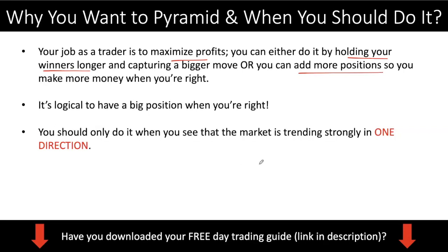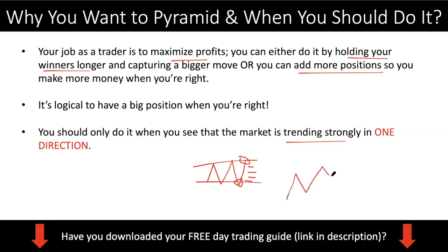So when should you do it? You should only do it when the market is trending. Do not do this in a range-bound market. It doesn't make sense because if price is going up and down, you just want to buy at the bottom and sell at the top. You don't want to accumulate on the way up because as price moves up into resistance in a range market, your profit margin gets lower and lower. So only apply this in a trending market. Let's say you enter here, then you enter here, then you enter here, and you just try to ride it. Do not do this in a ranging market — only in a trending market.